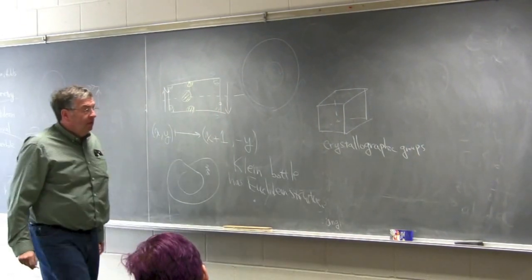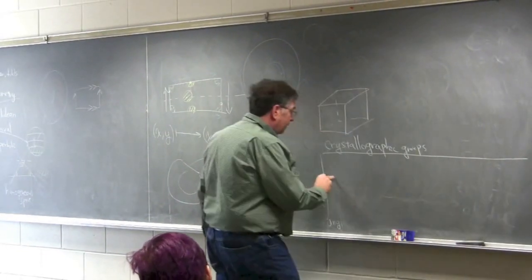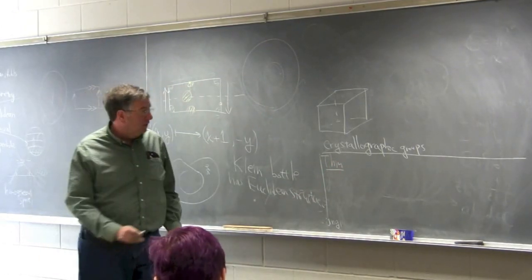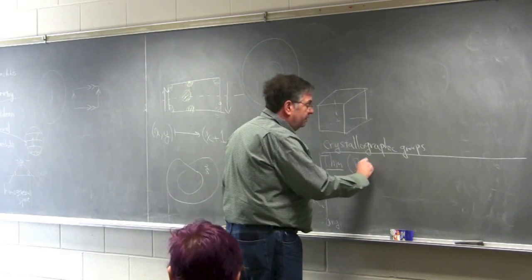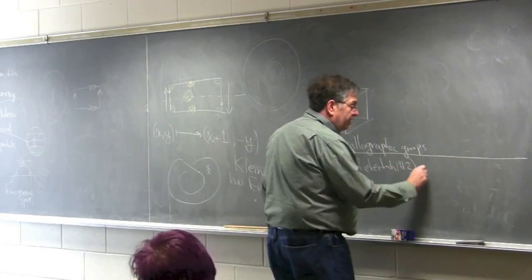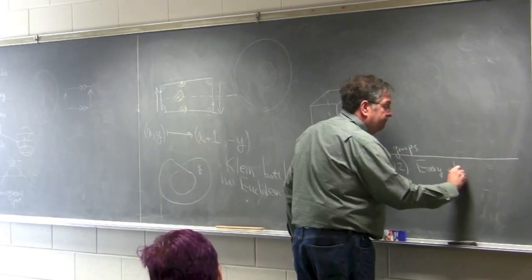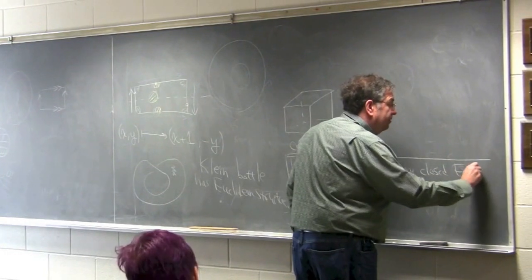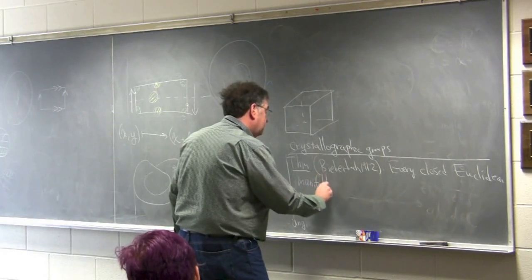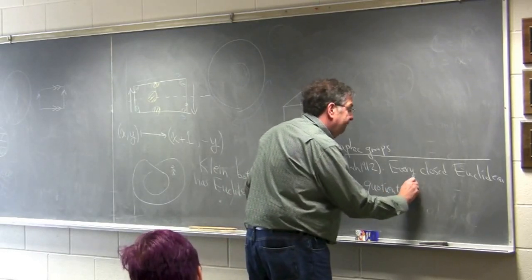A theorem — which I'm not going to prove, but it's discussed in Ratcliffe's book — is due to Bieberbach (1912): every closed, that is compact without boundary, Euclidean manifold is a quotient of a torus.